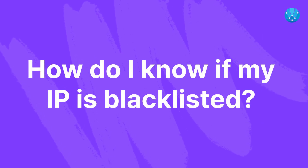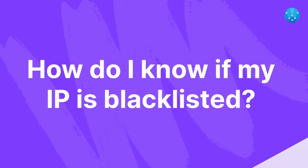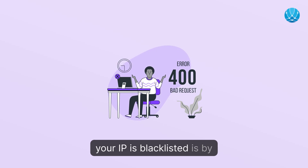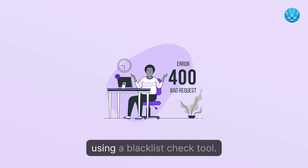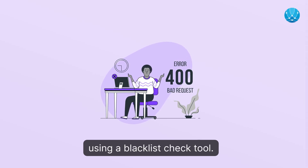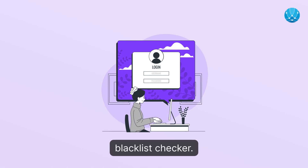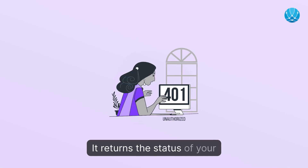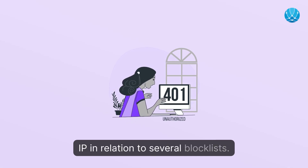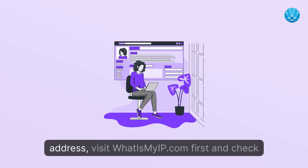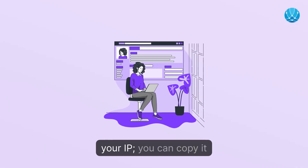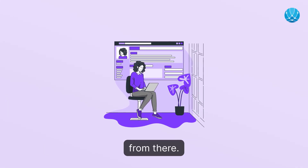How do I know if my IP is blacklisted? The simplest way to know if your IP is blacklisted is by using a blacklist check tool. Enter your IP into the IP blacklist checker — it returns the status of your IP in relation to several blocklists. If you don't know your IP address, visit whatismyip.com first, check your IP, and copy it from there.